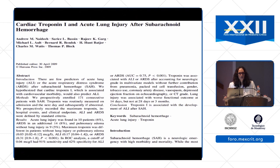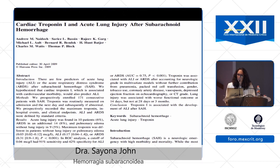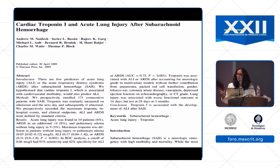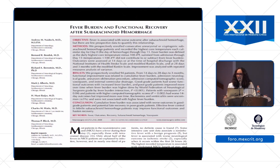We do EKGs, troponins, and echos in all SAH patients. Elevated troponin I is directly correlated with acute lung injury and ARDS in SAH. EKG changes are common — make sure they don't correlate with a coronary arterial distribution ruling out a true MI, especially in older patients with underlying coronary artery disease. Generally, EKG changes are a result of what's happening in the brain.